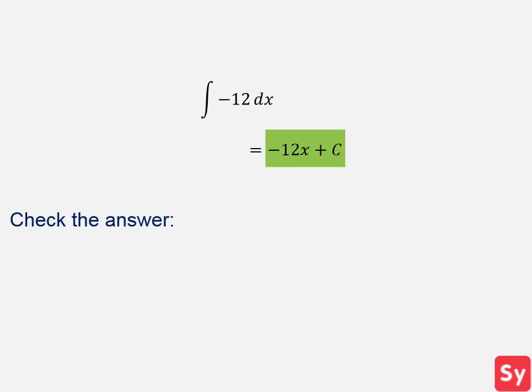But now we'll check our answer. We'll do this by taking the derivative of the antiderivative. So we take the derivative of negative 12x plus c, and we get negative 12, which is our integrand. So that means our answer is right.